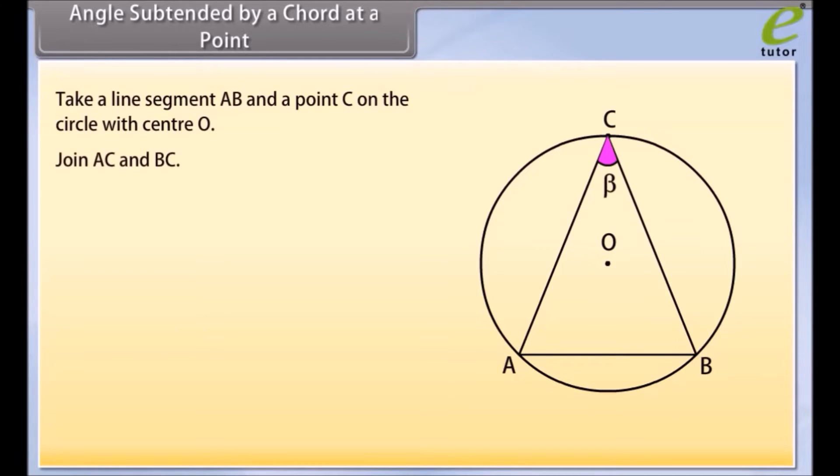Join AC and BC. Here AB is chord and angle ACB is the angle subtended by the chord AB.